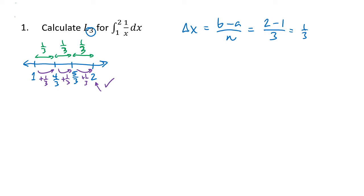Now that's where our dividing lines are. Which numbers do we use to find the heights of our rectangles? The letter L tells us we're going to use the left-hand endpoint of each subinterval. Our first left-hand endpoint is 1 (from 1 to 4/3). My second left-hand endpoint is 4/3 (from 4/3 to 5/3). My third left-hand endpoint is 5/3 (from 5/3 to 2). Notice that the 2 is never actually used because we're using left-hand endpoints.